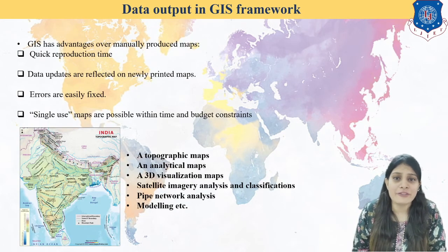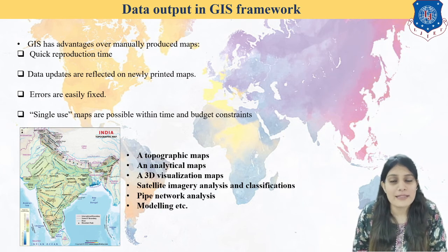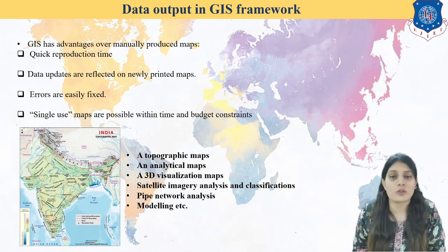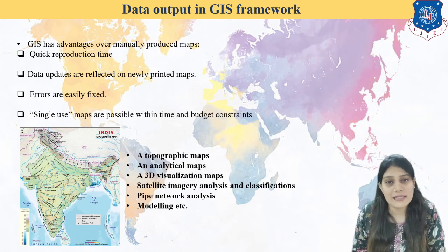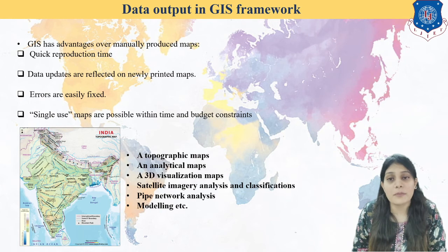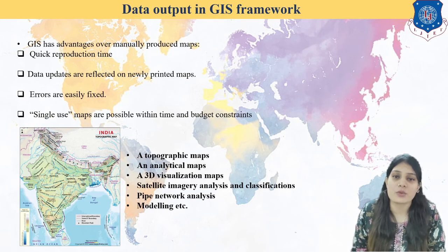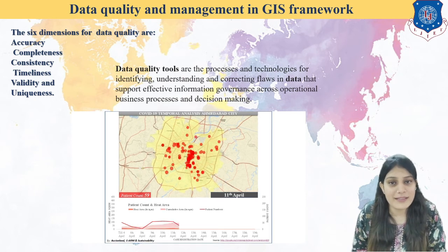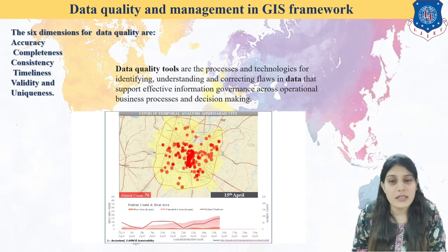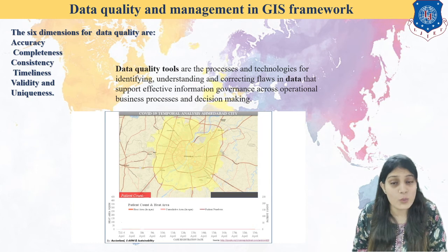Data outputs include topographic maps, density maps, dot density maps, cadastral maps, and land use and land cover maps. These are the outputs we get from GIS. Using various digital data of our country, we can generate these outputs and solve problems related to our city. For data quality and management, we require precision, accuracy, consistency, transparency, timeliness, validity, and uniqueness.